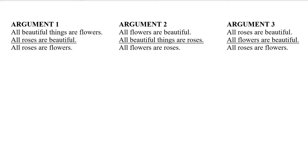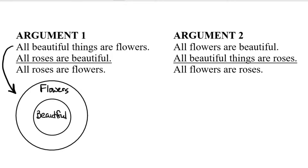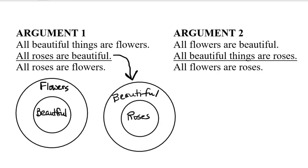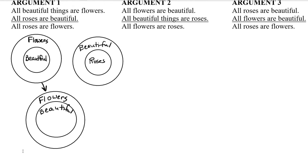Let's start by taking a look at argument one. The first premise says 'all beautiful things are flowers,' so we have beautiful things inside the smaller circle, and then flowers in the outer circle. The second premise says 'all roses are beautiful,' meaning roses fall into the beautiful category — roses in the inner circle, and beautiful in the outer circle. When we have an argument with several premises, we have to come up with a diagram that represents all the premises, combining these into one Euler diagram with beautiful things inside flowers, and roses inside beautiful.